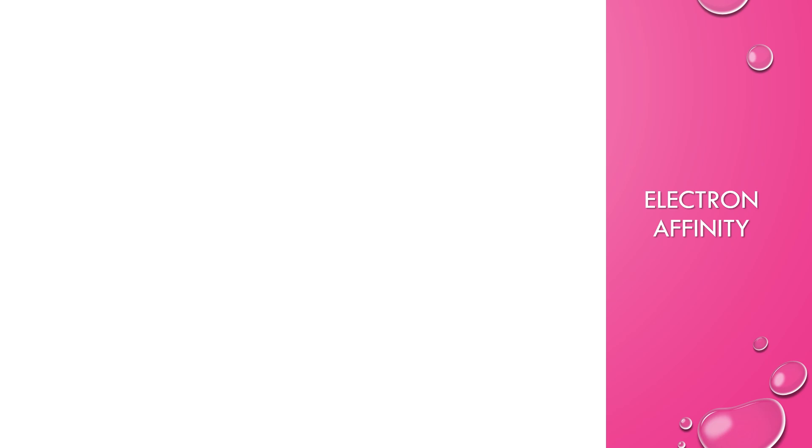Electron affinity is effectively the opposite of ionization energy. Ionization energy is always an endothermic process because you require an input of energy to break the bond between the nucleus and the electron being removed. Electron affinity is the reverse — it's when an atom is gaining an electron. In some cases you will have a positive value and in some cases a negative value. The more negative the electron affinity, the more the atom is attracting electrons — so more negative equals more attractive.